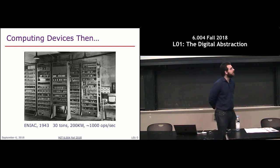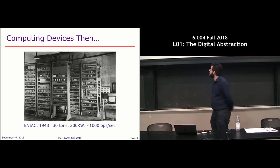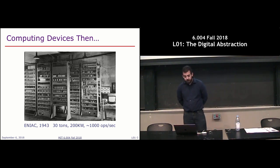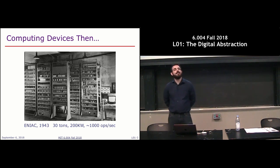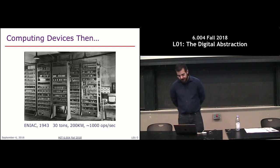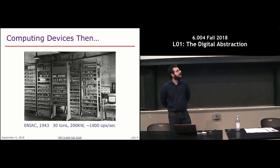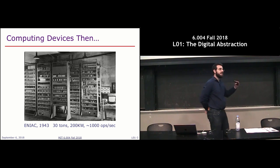The ENIAC was a computer built in 1943. It was in fact the first digital electronic programmable machine. It weighed 30 tons, took several rooms, and when you turned it on, it consumed 200 kilowatts worth of power. For those 200 kilowatts, you got a thousand operations per second. It consumed so much energy — it was installed in Philly, and back then everyone knew when this machine was turned on because all the other lights in the city would dim.